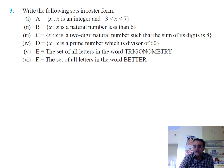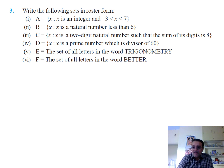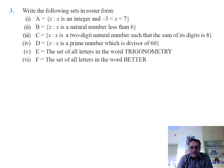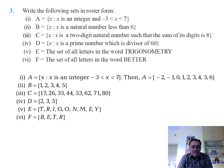80 is also included. The next set is {x : x is a prime number which is a divisor of 60}, giving 2, 3, 5. The fifth bit — letters of the word 'trigonometry' — gives distinct letters T, R, I, G, O, N, M, E, Y. The last bit — letters of the word 'BETTER' — gives distinct letters B, E, T, R. So these are the answers for question 3.